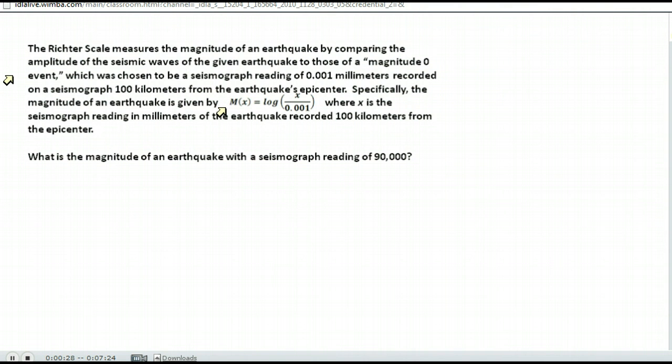The magnitude of an earthquake is equal to the log of x over 0.001, where x is the seismic reading that they have gathered for that earthquake. So this is how we usually hear the strength of an earthquake. They don't usually tell you the seismic reading. They tell you the magnitude of 8.5 or 2.4 or 3.6, and this is the formula that they use to find that.